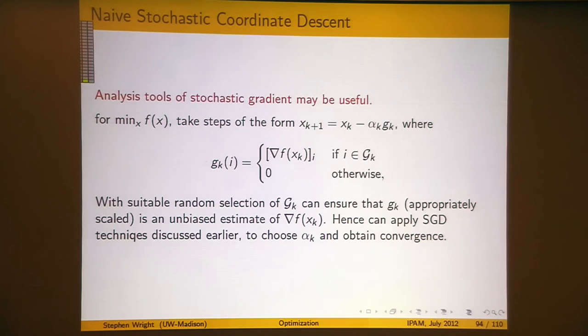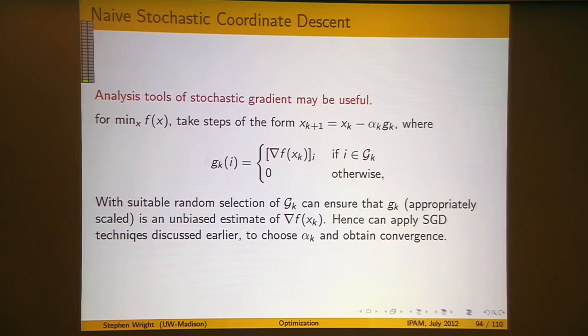Now let's think more about randomized strategies, where there's some randomness in the way that you choose gk. Returning to the unconstrained case, suppose you have a strategy where you select gk completely randomly and independently at every iteration. You might just toss a coin for each element and decide whether or not to put it into gk.